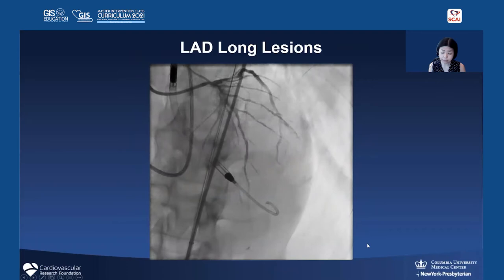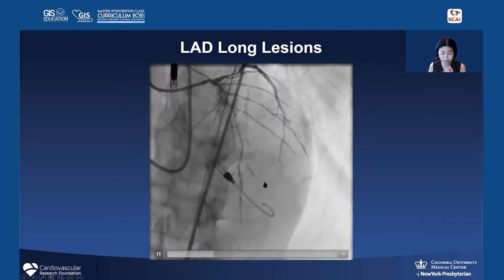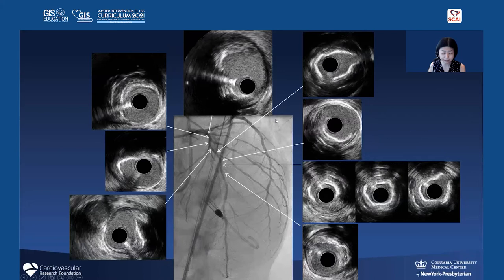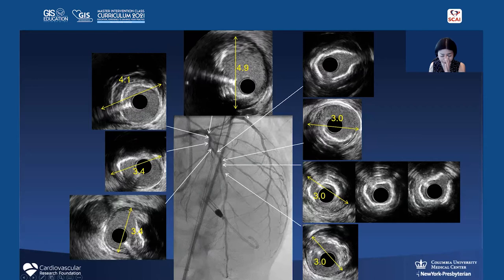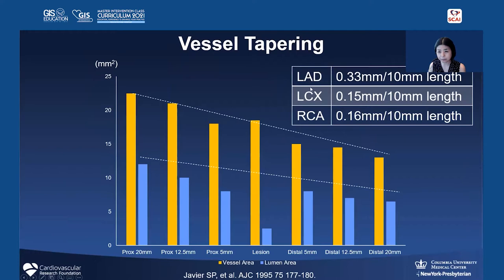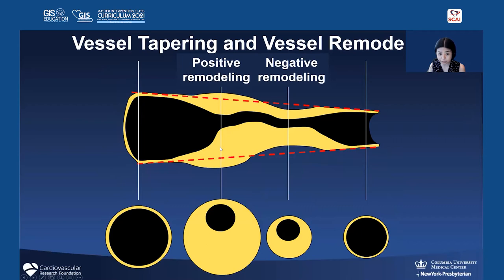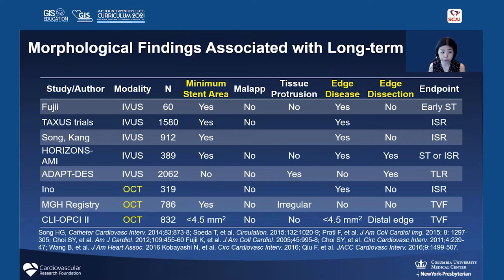Now let's talk about stable patients. In a very diffuse LAD with almost no idea of vessel size or landing zone, we performed IVUS and measured consistently: proximal LAD 4.9 mm, after the first diagonal 4.1 mm, after the second diagonal 3.4 mm, after the third diagonal 3.0 mm — showing consistent tapering. The LAD tapers more than the right coronary artery, typically 0.33 mm per 10 mm, most likely at side branch locations. Before imaging, vessel remodeling can be positive or negative and is very heterogeneous.